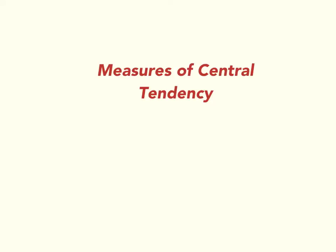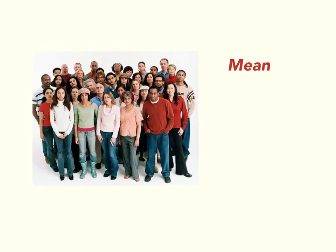In this video, we're going to talk about measures of central tendency. Measures of central tendency are numbers — calculations of numbers — that characterize a group of people, either a sample of people, like what's shown here, or a population of people. There are three measures of central tendency: the mean, the median, and the mode.